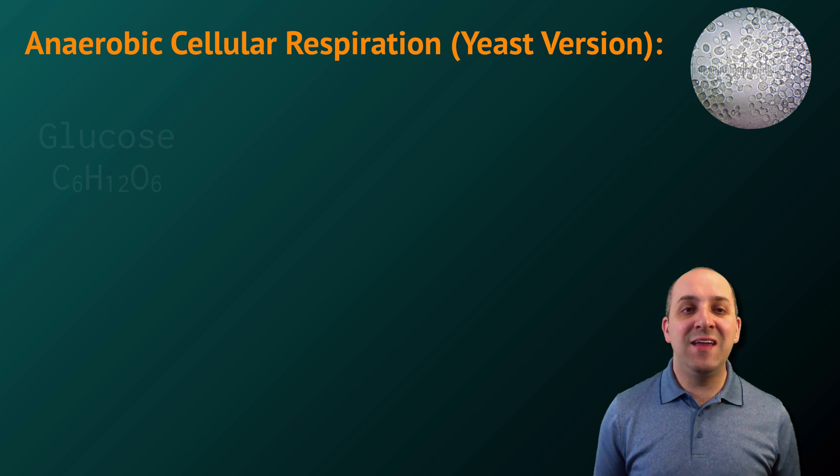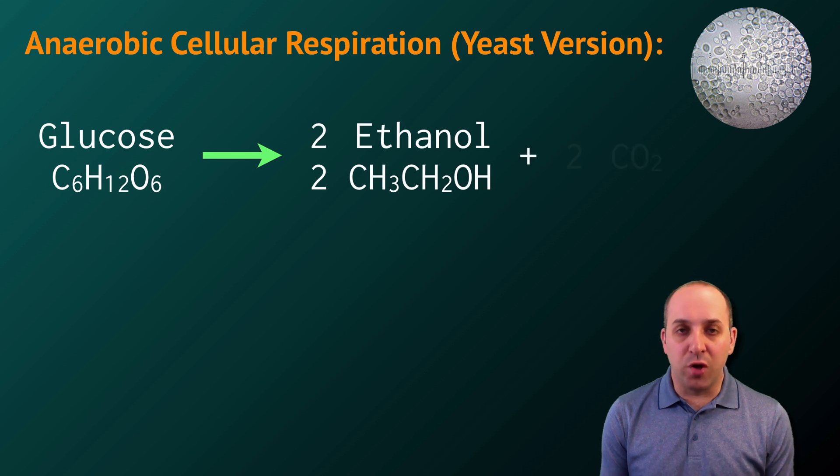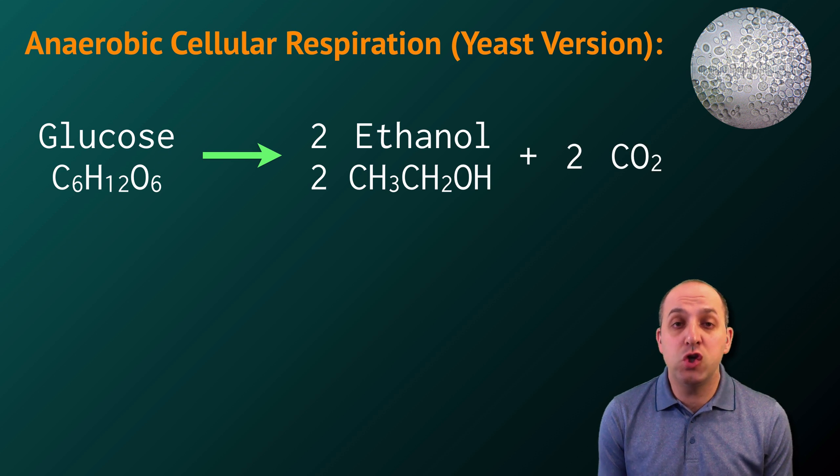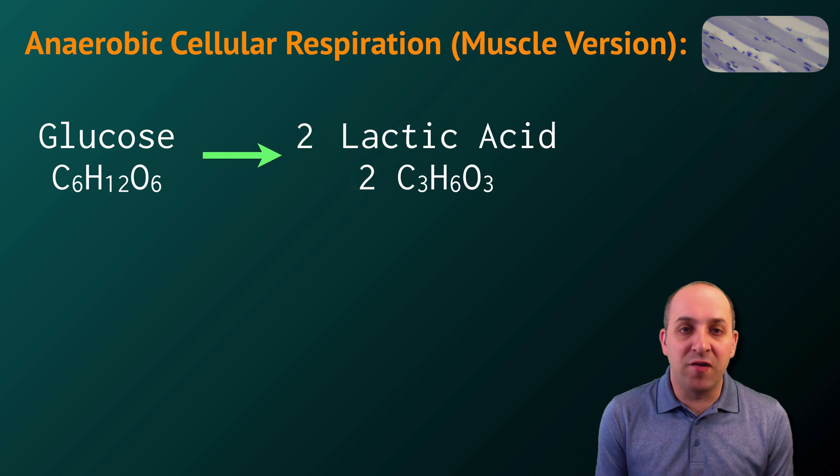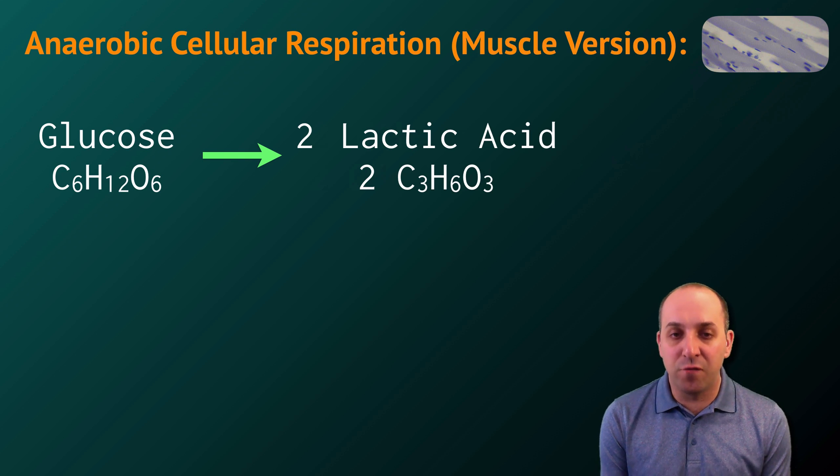Let's look at two examples. In the yeast version of anaerobic cellular respiration, glucose will be converted into two ethanol molecules and two carbon dioxides. It's the production of that carbon dioxide that causes bread to rise. Of course, the other molecule that's produced is also very commercially valuable. To look at another example, we can consider the version that happens in our own muscle cells in which glucose is converted into two lactic acid molecules.